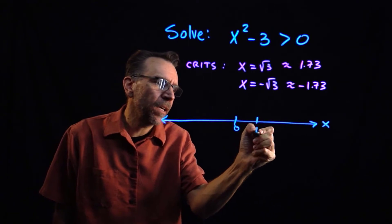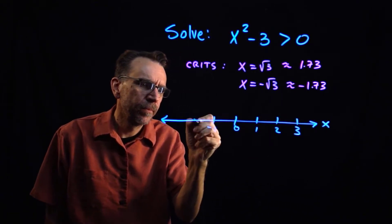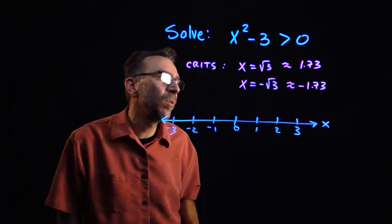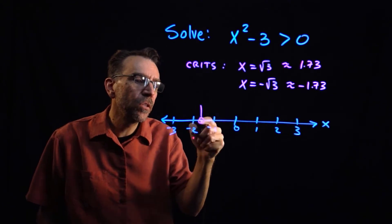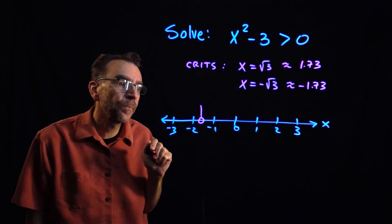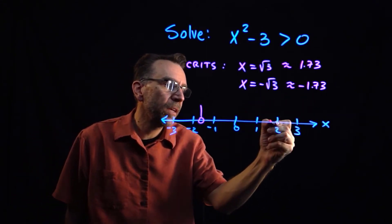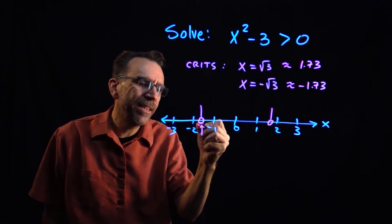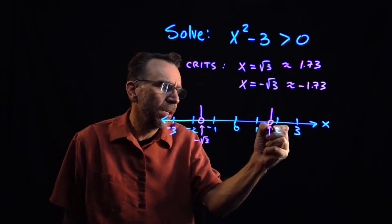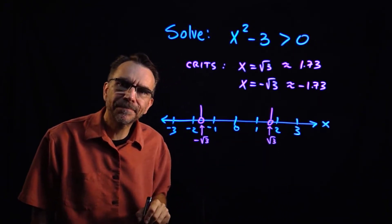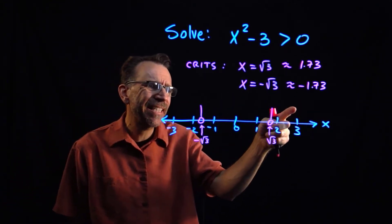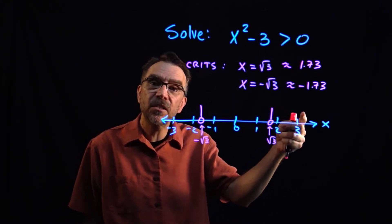I'll put an open dot at negative 1.73. I choose an open dot because this is a strict inequality — there's no equal sign, so we're not including the zeros. Another open dot at 1.73. I'll label them with their exact values: negative square root of 3 and square root of 3. Once I have my three regions, I test values to see if the results are positive or negative in each region.